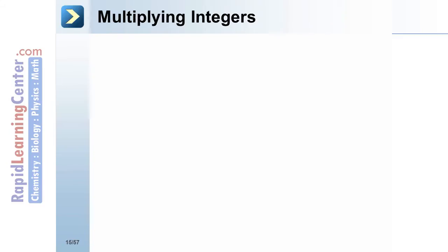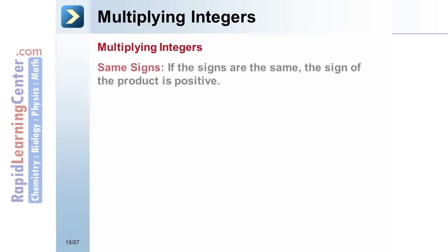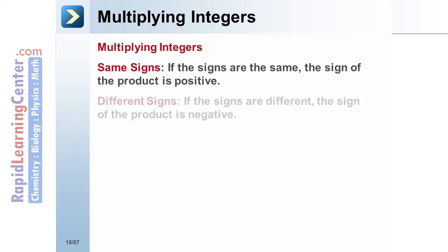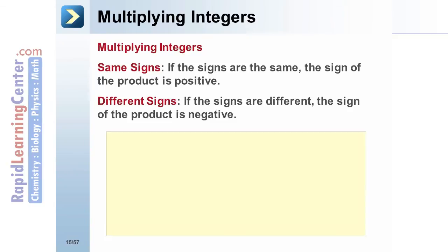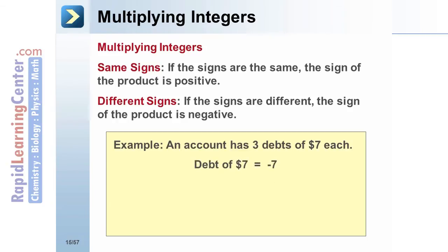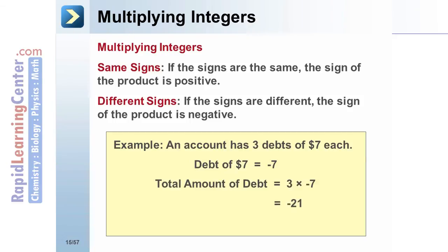Multiplying integers: if the signs are the same, the sign of the product is positive. If the signs are different, the sign of the product is negative. Example: an account has 3 debts of $7 each. A debt of $7 is represented by negative 7. The total debt is 3 times negative 7, which equals negative 21 — the account balance will change by negative 21 after the debts are paid.